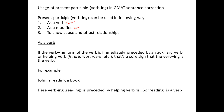First, as a verb. Now, remember, whenever verb-ing is preceded by any of the helping verbs — I am talking about is, am, are, was, were, etc. — verb-ing is acting as a verb. So if you look at this example: 'John is reading a book.' Here, 'reading' is verb-ing and it is preceded by 'is', which is a helping verb. So in this case, reading is a verb. This is the first usage of verb-ing.